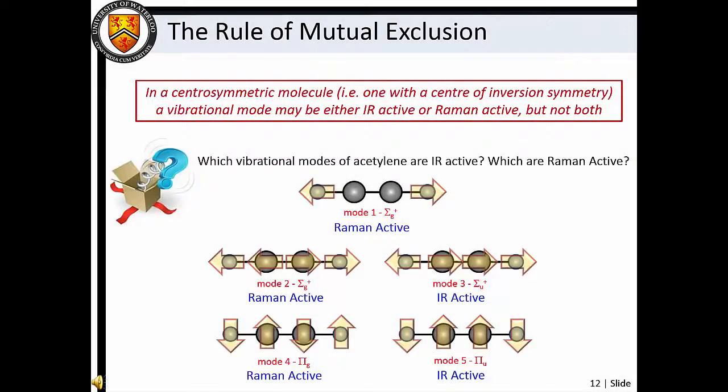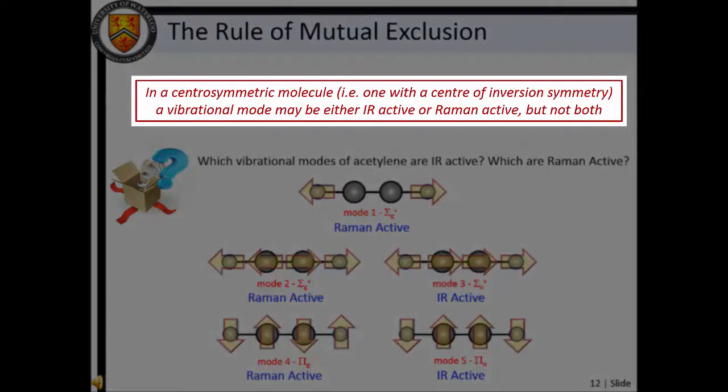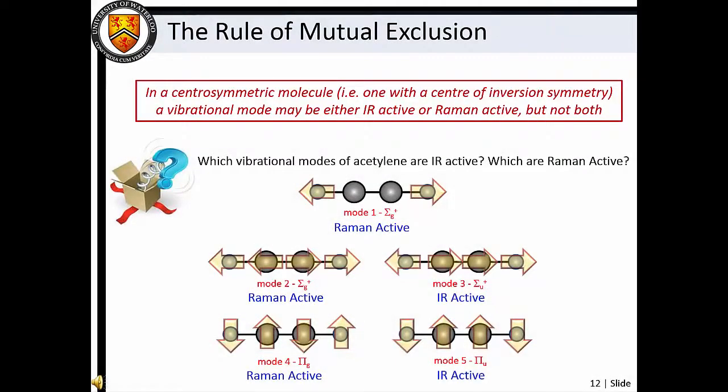In cases where the molecule has a center of inversion, we can apply the rule of mutual exclusion to predict Raman and IR activity. The rule of mutual exclusion states that for centrosymmetric molecules, a vibrational mode must be either Raman or IR active, not both. So, for species like acetylene, we see that the spatially symmetric normal modes, those with the gerade labels, are Raman active, while the spatially asymmetric modes, those with the ungerade labels, are IR active.